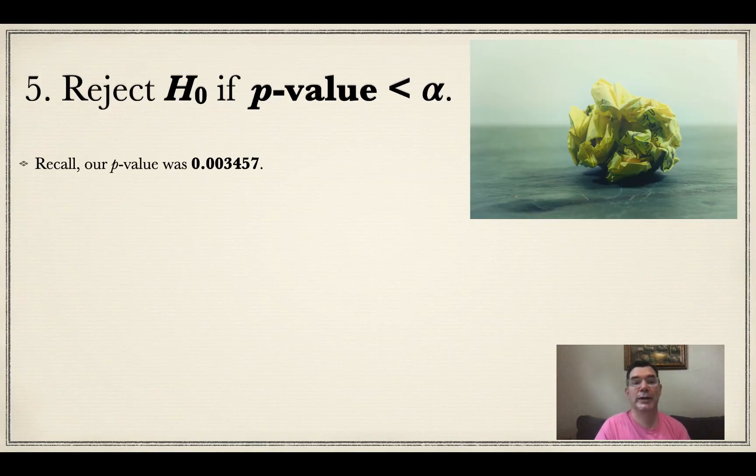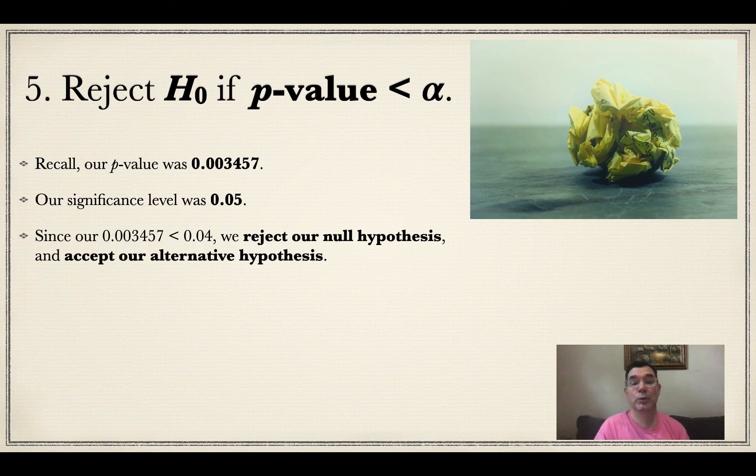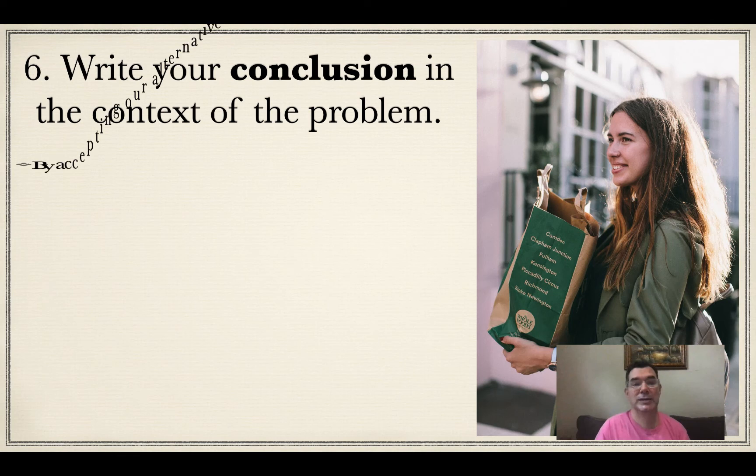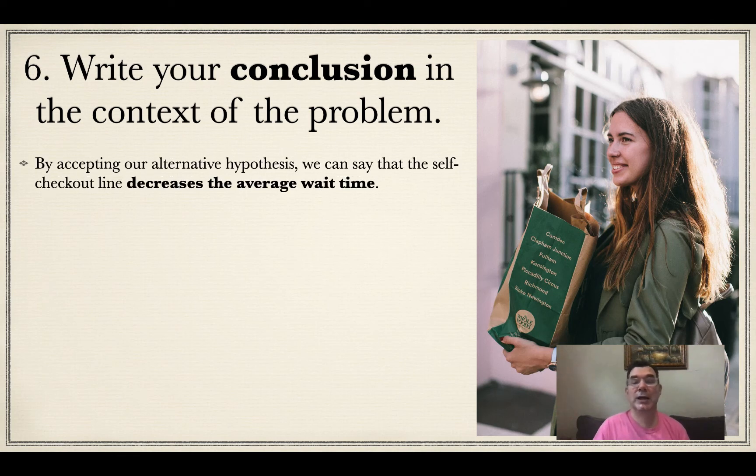I noticed that that is less than my value of alpha, which is 0.05. That means I will reject my null hypothesis and accept my alternative hypothesis. In the context of the problem, what that means is the self-checkout line actually does decrease the average wait time of the customer.